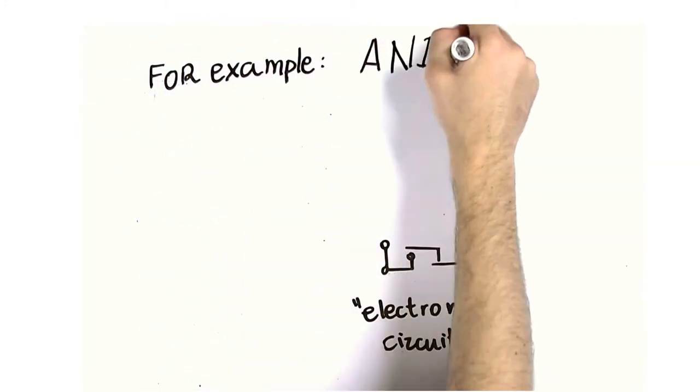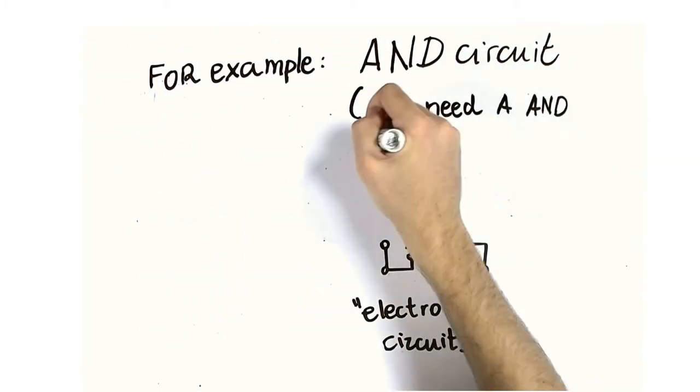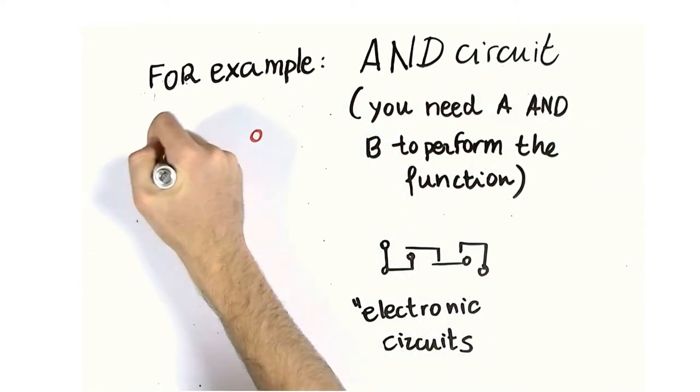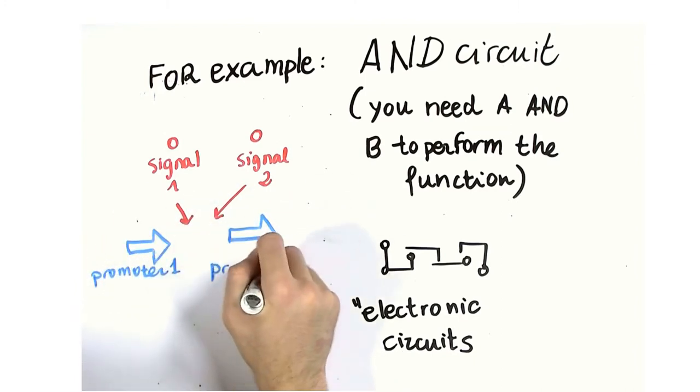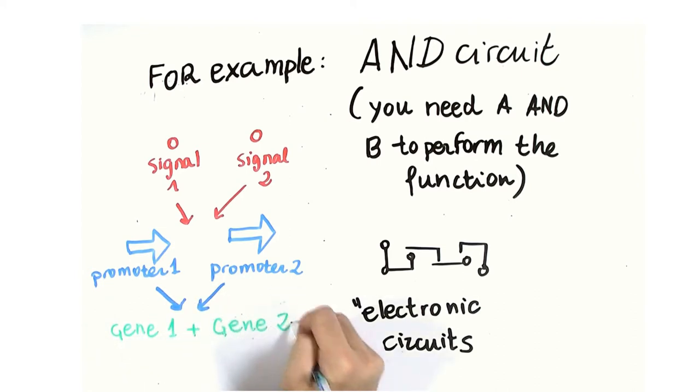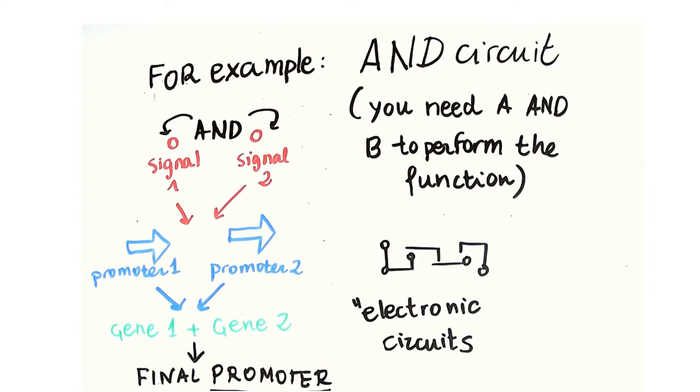For example, a simple genetic circuit would be an AND gate, where you need two signal molecules which activate two different promoters to activate two different genes, which produce two different gene products, which together are needed to activate a third promoter to get at the desired gene product.